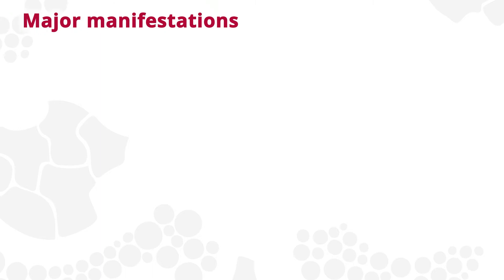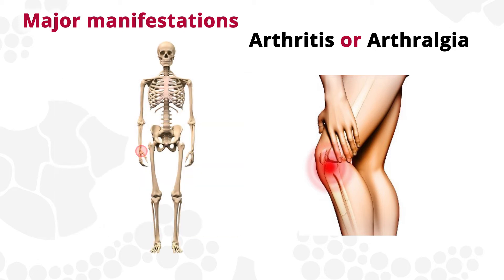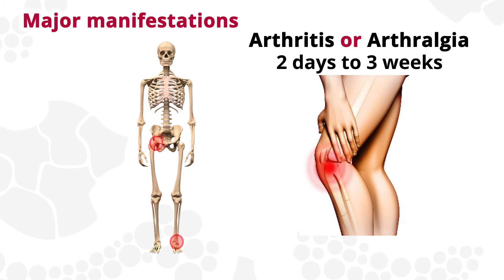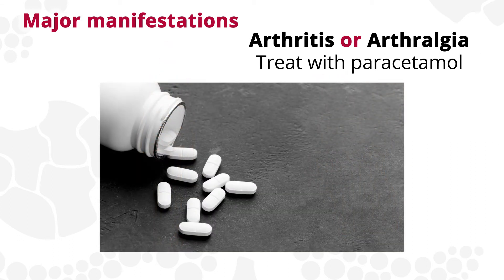The most common major manifestation is arthritis or arthralgia. Pain, redness and swelling usually occur in a large joint or joints and limits movement. The pain is classically migratory, transient and asymmetric, and extremely intense. It can last from two days to three weeks in each joint. The description of pain can seem inconsistent and can easily be dismissed if not better in a few days. The pain should be treated with paracetamol until a definitive diagnosis is made, because the symptoms can be masked by non-steroidal anti-inflammatory medication.